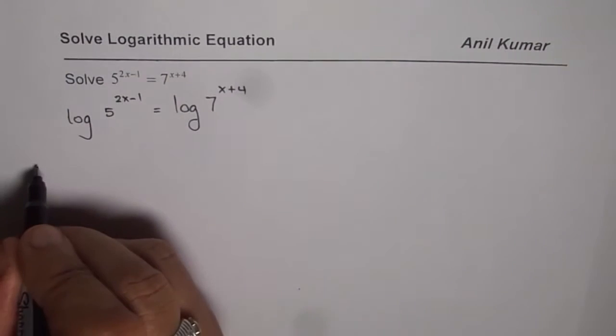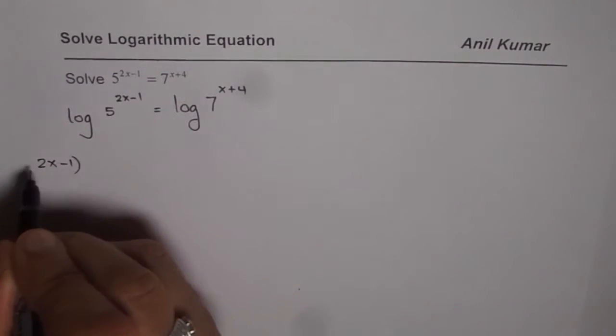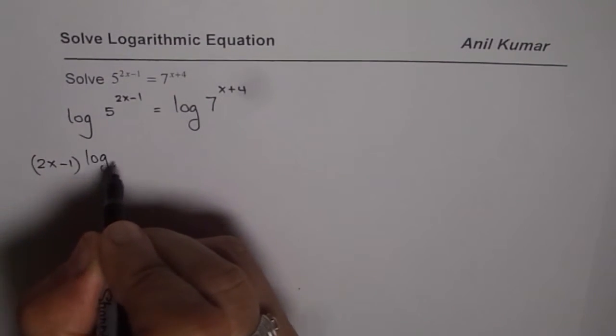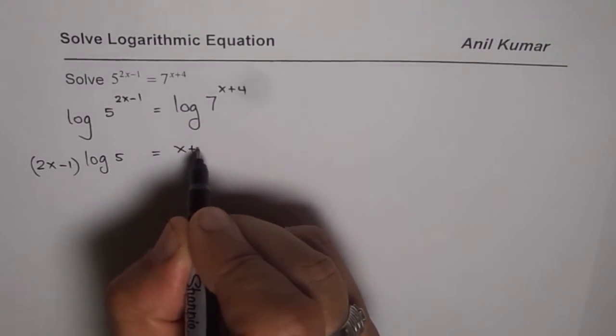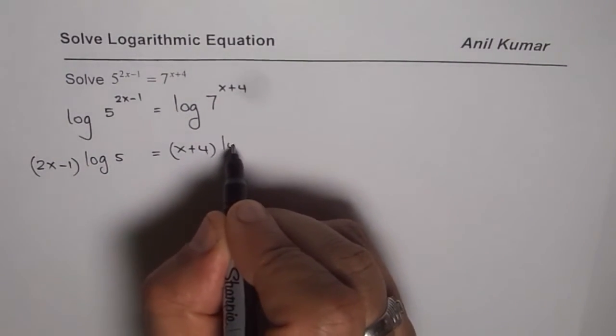Applying the power rule we get 2x minus 1 times log of 5 equals to x plus 4 times log of 7.